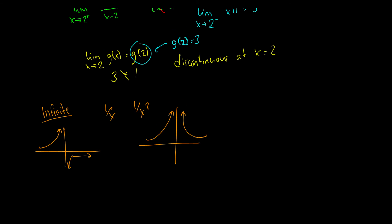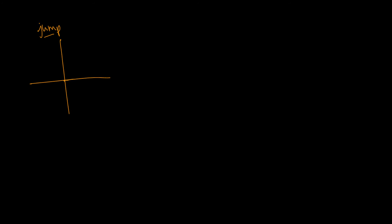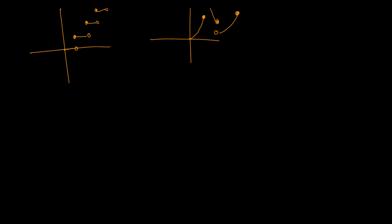There's another type called jump discontinuities. These are graphs where the function is not defined at a point, and then jumps — kind of has a stepladder-like appearance. There are also piecewise functions that do some weird twists and turns but are never actually continuous. You can tell these are discontinuous just by looking at the graphs, because you have to pick up your pen to draw them.